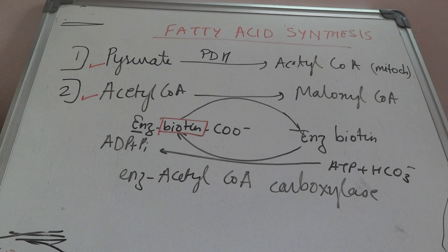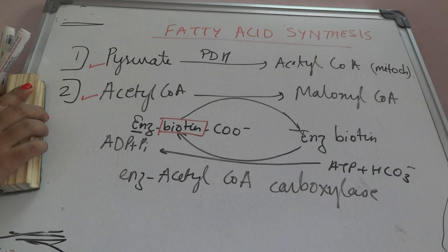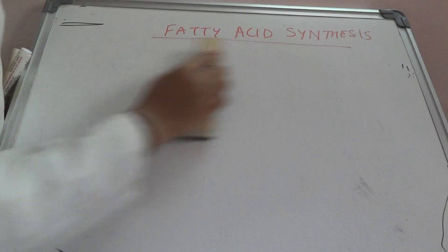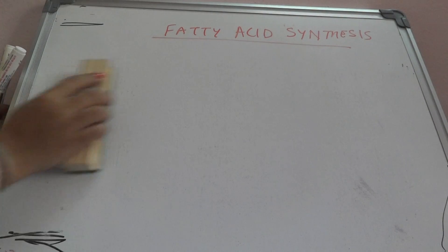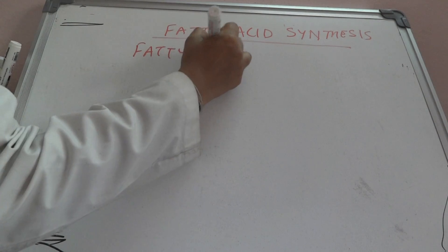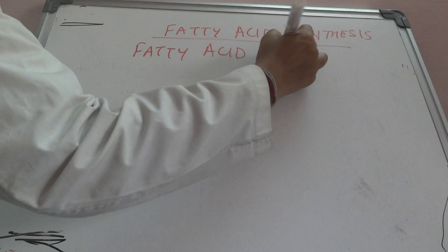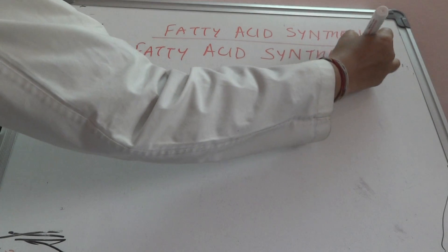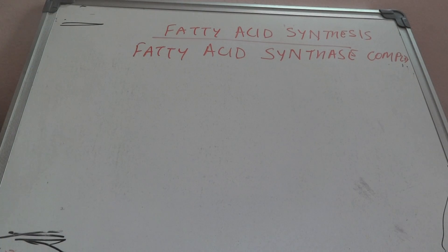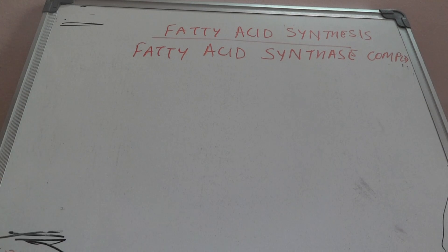So these are the first two important reactions for fatty acid synthesis: pyruvate forming acetyl-CoA, and acetyl-CoA forming malonyl-CoA in the presence of acetyl-CoA carboxylase, which requires biotin for carbon dioxide fixation. Now we have acetyl-CoA and malonyl-CoA, and we start with the fatty acid synthesis cycle. Before looking at the cycle, we need to know the fatty acid synthase complex.